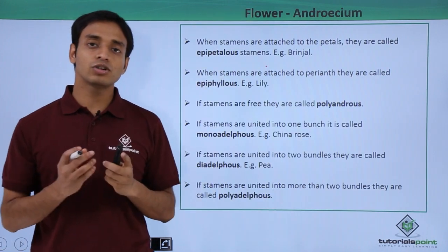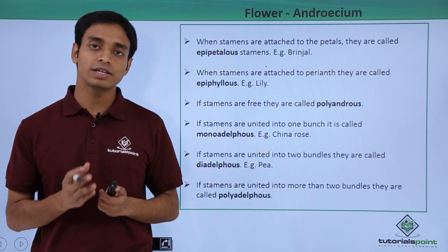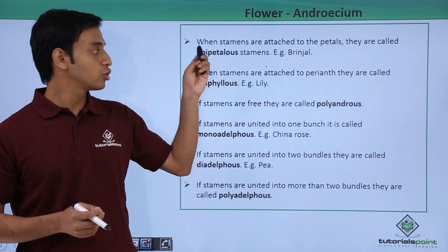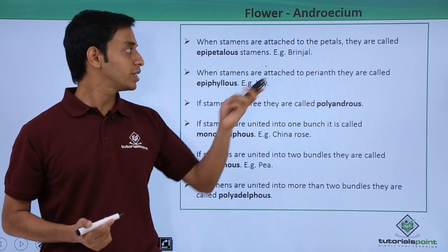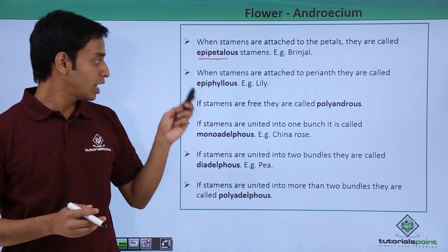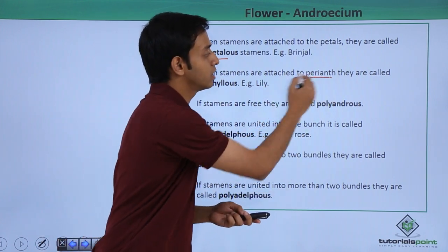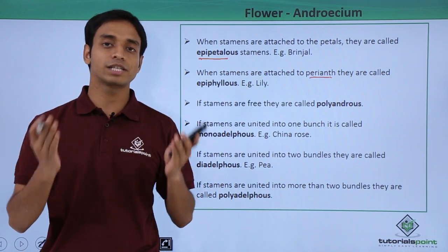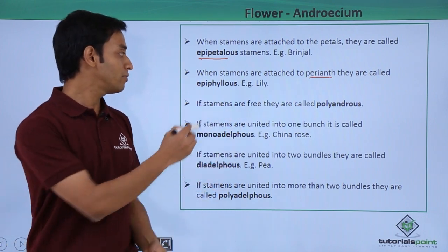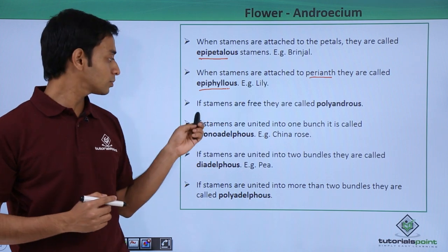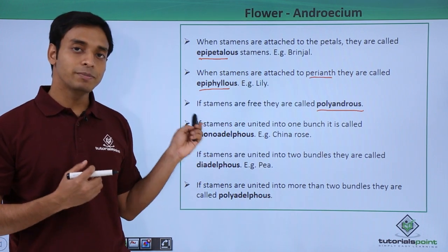Based on the arrangement of the androecium in a typical flower, different types have been identified and given different names. If the stamens are fused or united with the petals and not free, they are known as epipetalous — a good example is brinjal. If the stamens are united with the perianth (where sepals and petals cannot be distinguished and remain fused), they are known as epiphyllous — an example is lily. If the stamens are free, they are called polyandrous.